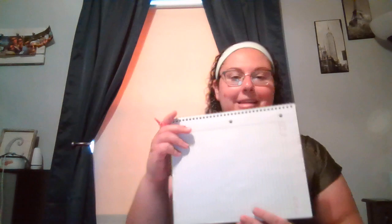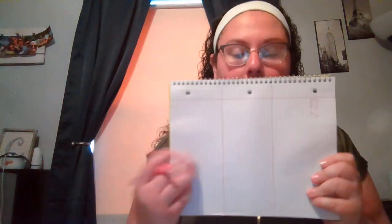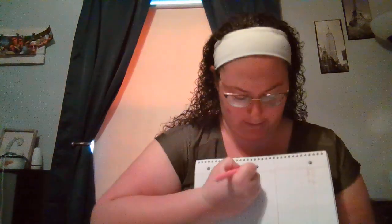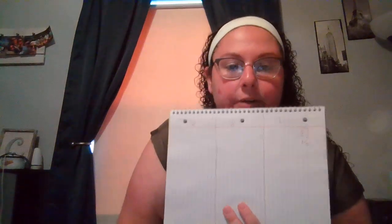Then what I want you to do is flip it horizontally so the lines are going the wrong way, and at the top over here, you're going to be creating a chart. I want you to draw two lines — one line right here, and another line right here — so it makes a chart. You should have three separate parts. Now you're going to draw a K at the top of the first one, a W in the middle, and an L in that order. We're going to be filling this out today and tomorrow.